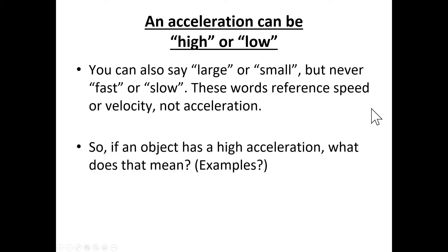If an object has a high acceleration, that means the velocity is changing in a very short period of time. A bullet being fired from a gun goes from zero meters per second to a very large velocity in a very short period of time. A baseball hit by a bat is moving in one direction with a high velocity, then all of a sudden is moving in the opposite direction with a high velocity — a very large change in velocity over a very small period of time. If a motorcycle is running a corner very quickly, there is a very large change in velocity because there's a change in direction over a small period of time.